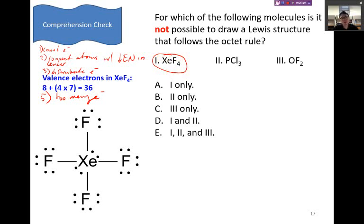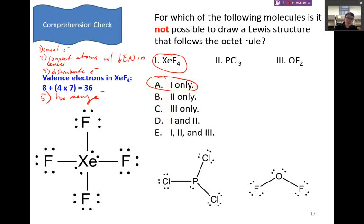What about the other two molecules? Well, when you draw their Lewis structures, we see for phosphorus trichloride, we can draw a structure that follows the octet rule. And for oxygen difluoride, we can draw a Lewis structure where it follows the octet rule. So the only one for which it is impossible to do is number one.